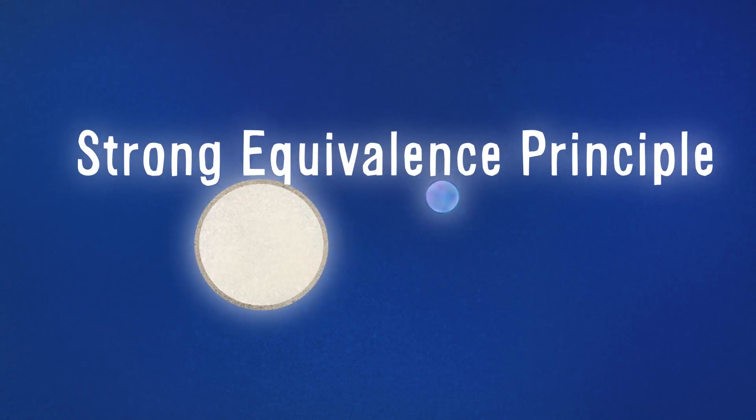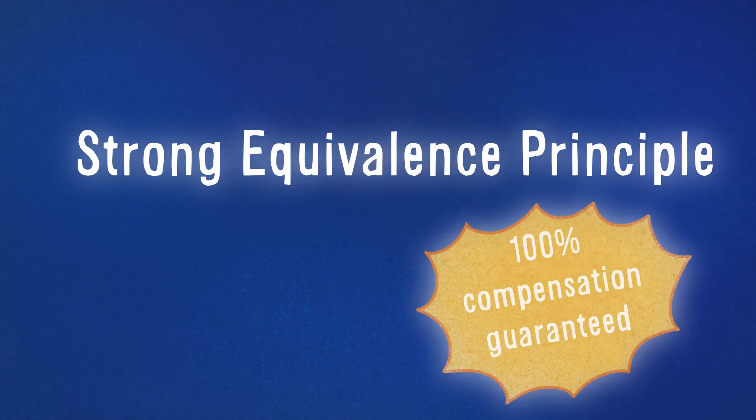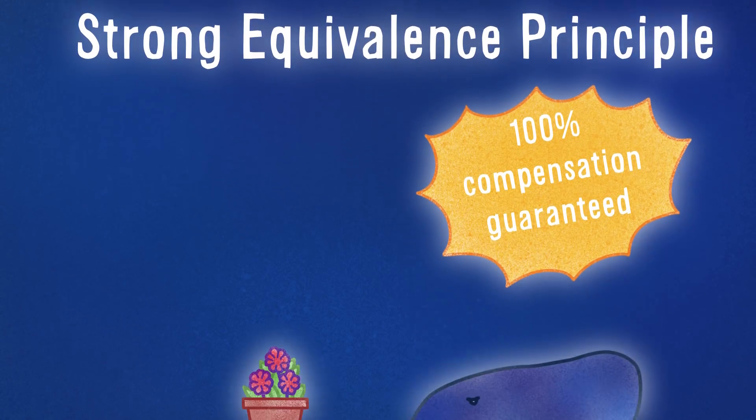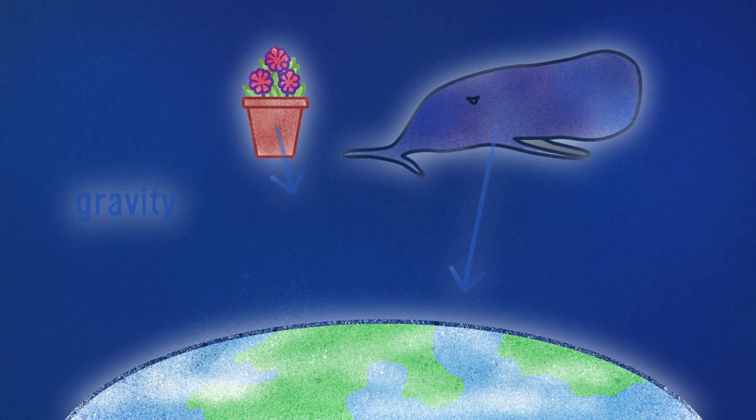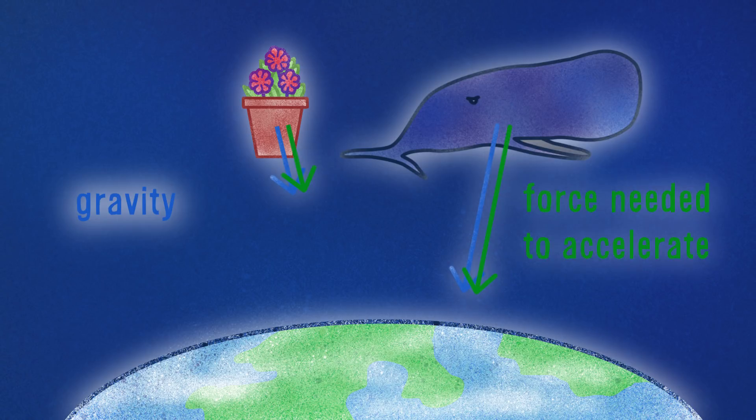The target of all this experimenting is the strong equivalence principle, gravity's remarkable compensation scheme. The heavier an object, the stronger the force of gravity. But at the same time, the heavier an object, the more force you need to change its speed. These two effects cancel each other out.